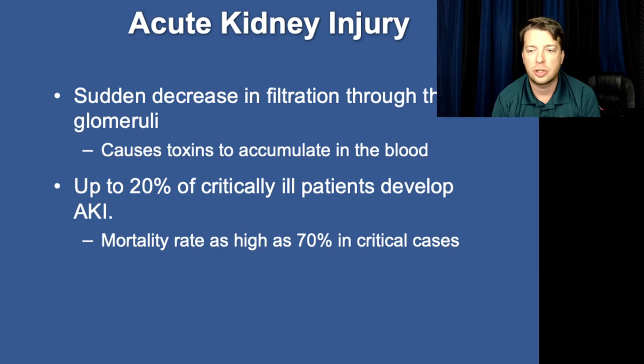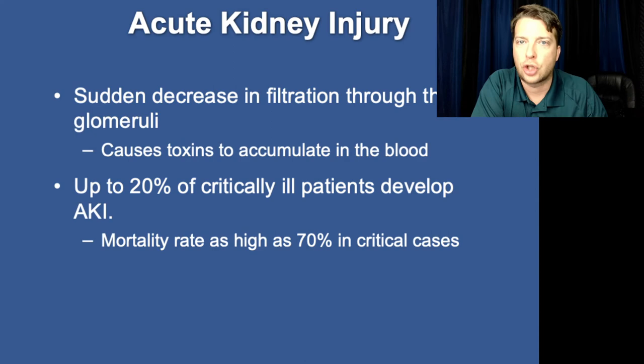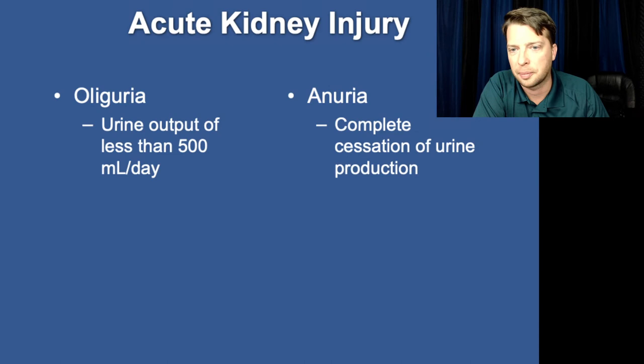Critically ill patients will develop this — up to 20%. This is a sudden loss of kidney function or blood flow to the kidney. Shock patients, sepsis patients — these are your at-risk patients. Once it happens, you have a fairly high mortality. This is what leads to acute kidney failure.